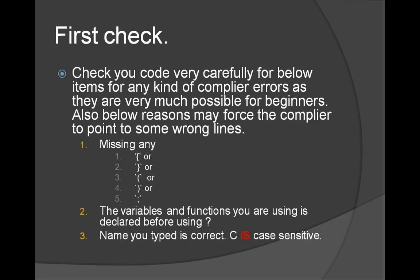So when you get compiler errors, follow the first three things to check. Have you missed any curly braces — open or closing? Have you missed any parenthesis? Or any semicolon? Each statement in the C programming language should end with a semicolon.